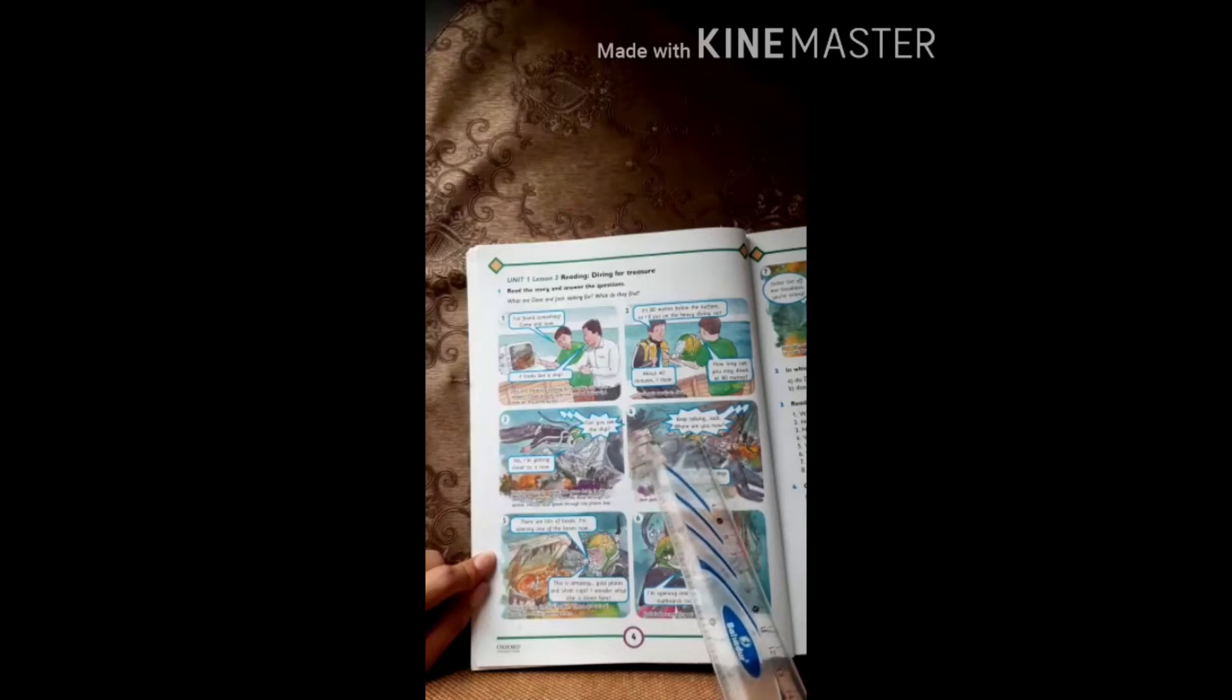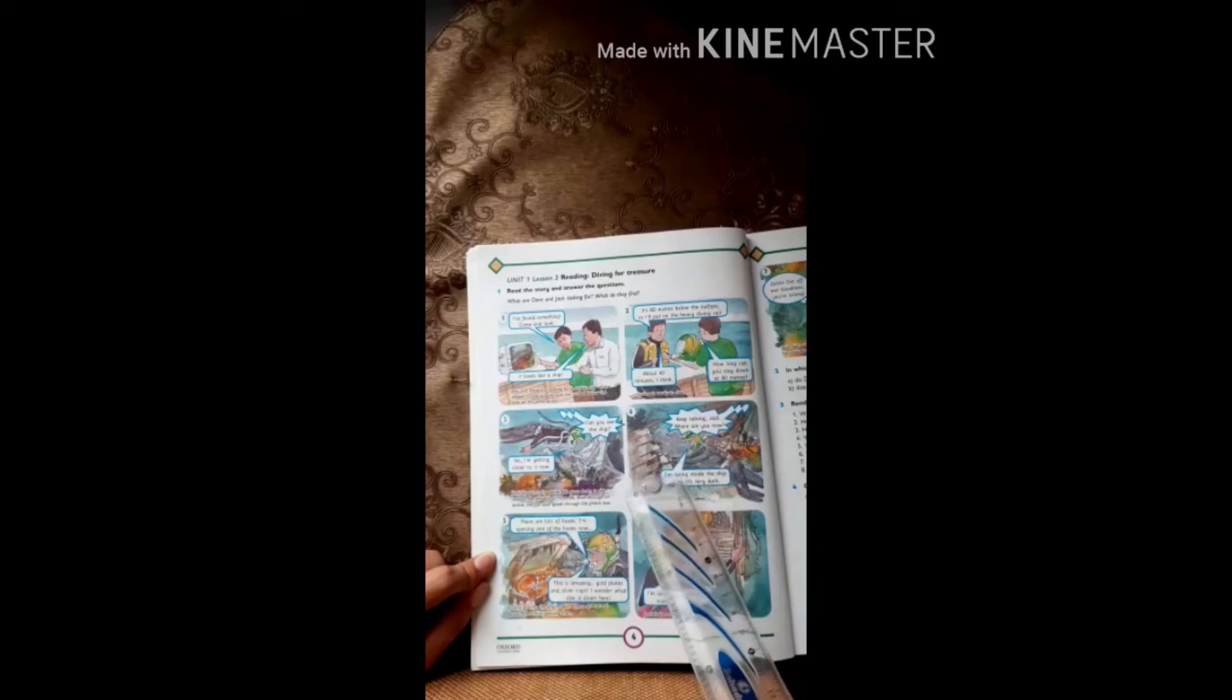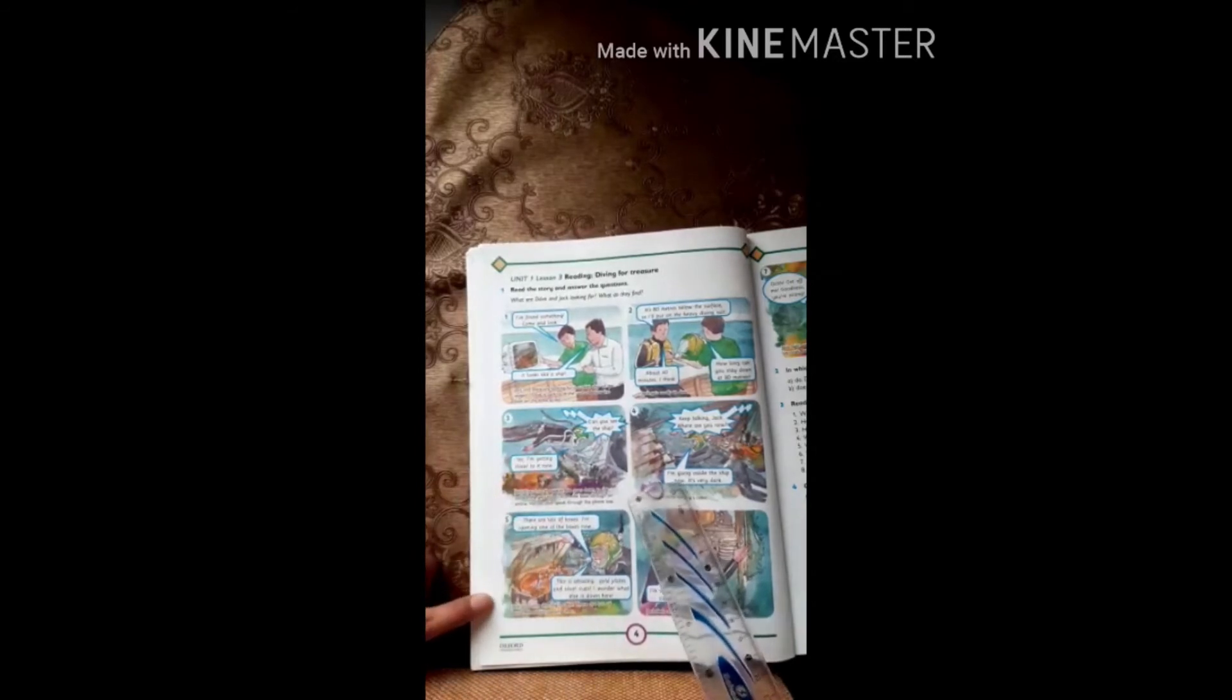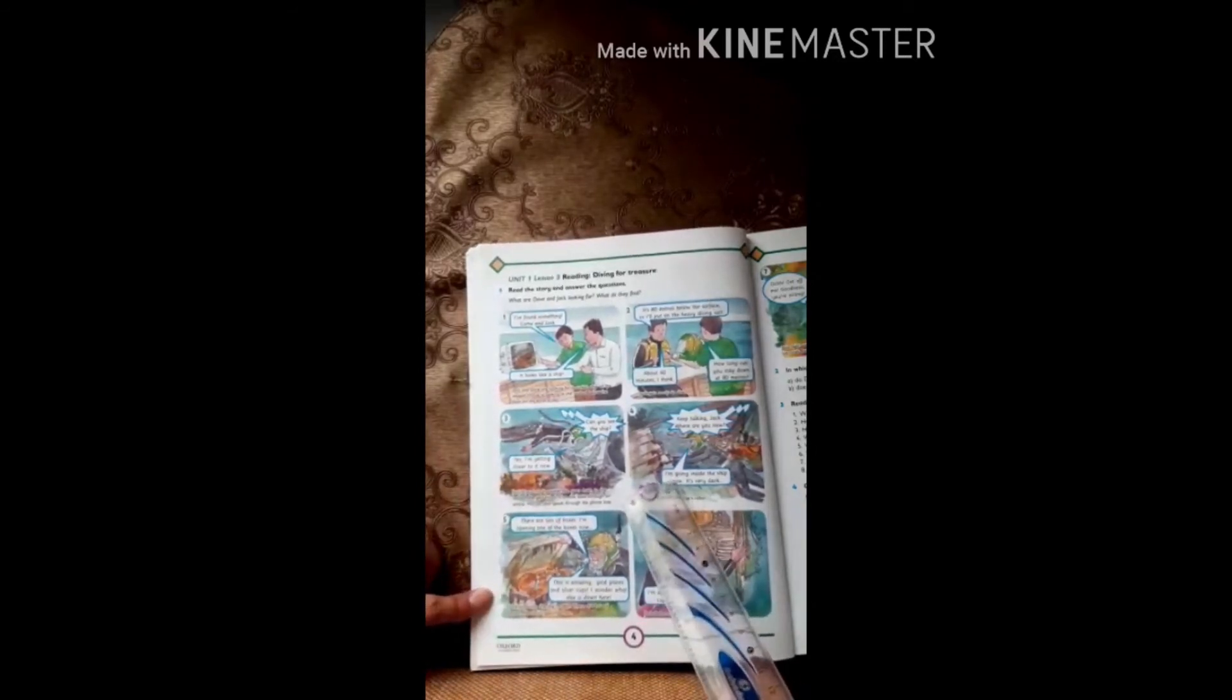Now look at the next picture, picture number four. Keep talking Jack, where are you now? Dave is saying keep talking, keep talking means continue speaking. Jack where are you now? I am going inside the ship now. Jack is replying I am going inside the ship now. This is present continuous sentence. I am going inside the ship now, it's very dark.